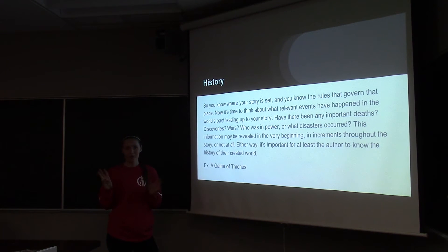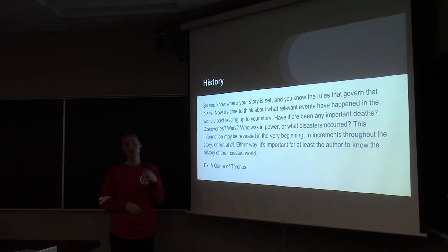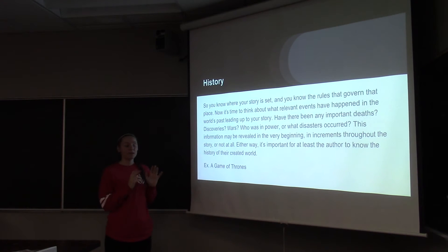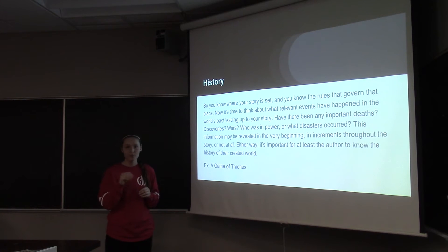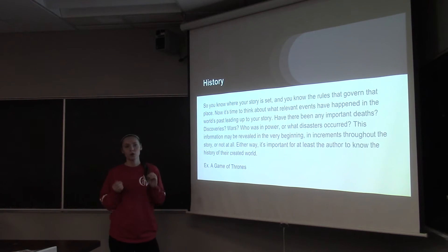Our third idea is the history of the place. If the plot right now has elements that have happened in the past leading up to it that are important, you need to make those known to the reader. Sometimes that could mean beginning your story with some background, or background appears in little bits throughout the story when it becomes relevant, or you might never put that history in — it's just known to you as the writer, but it's still important in helping you develop your overall world.